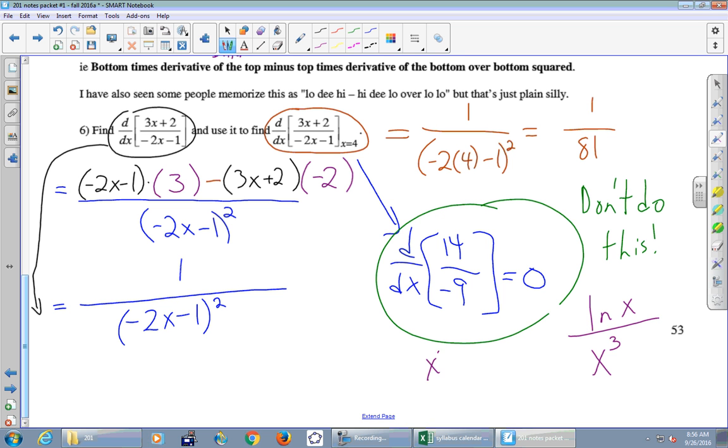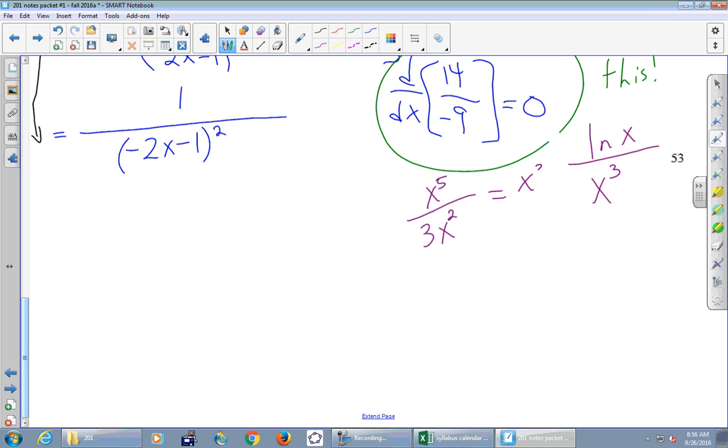How about this thing? x to the fifth over 3x squared. You could use a quotient rule. Do we need to? We could cancel the x's. So what happens there? x cubed over 3. Do we need to use the quotient rule on that? No, because the bottom is just a number. And so this is really just a one-third. In my mind, this is how I see it. And that's an easy power rule, right? The quotient rule will give you the right answer, but don't go around using the quotient rule every time you see a fraction. It's really about having x's on the top and x's on the bottom that don't just cancel out.